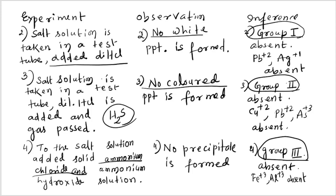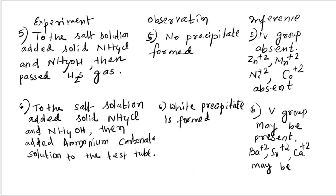We proceed to group four. Ammonium chloride and ammonium hydroxide are added to the salt solution, then H₂S gas is passed. No precipitate is formed, meaning group four is also absent. Group four cations Zn²⁺, Mn²⁺, Ni²⁺, and Co²⁺ are absent.